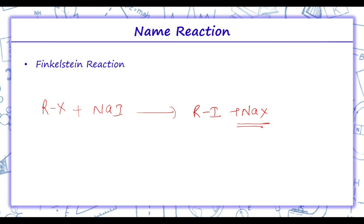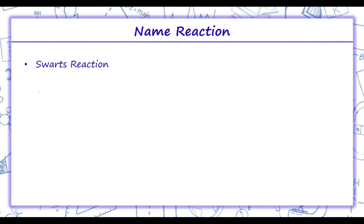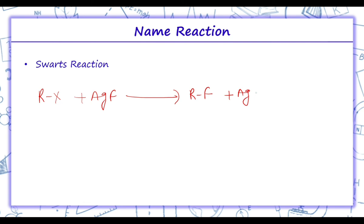Moving on to Swarts reaction. Swarts reaction involves heating alkyl halide in the presence of metallic fluorides like AgF, Hg2F2, cobalt fluoride, or SbF3. All these metal fluorides will give alkyl fluoride. In Finkelstein we get iodides, whereas in Swarts reaction we get alkyl fluorides.